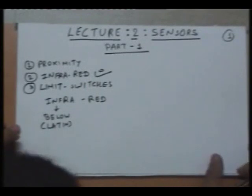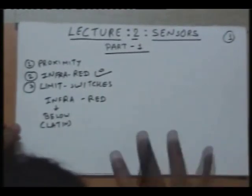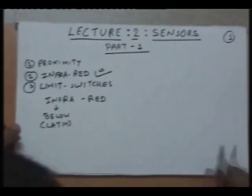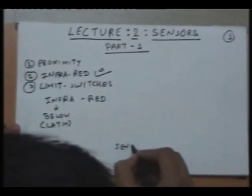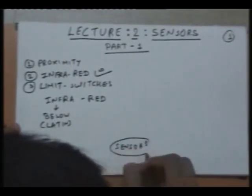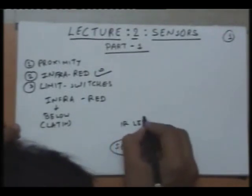In the circuitry of IR sensors, we will have four types of components basically. The IR circuit is made up of IR LED,